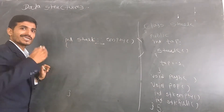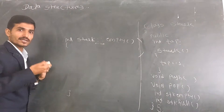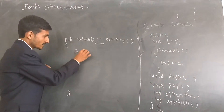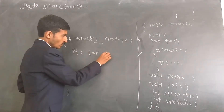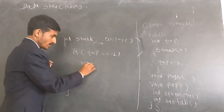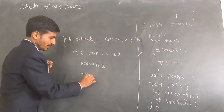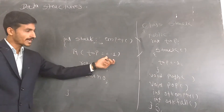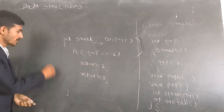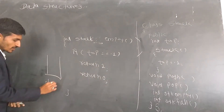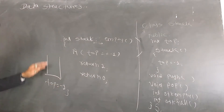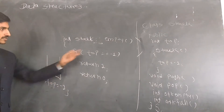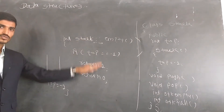To check the empty condition — meaning there is nothing in the stack and we are trying to retrieve data — that is not possible. So we write the condition: if top equals minus one, then return true, otherwise return false. We can also say return 1 and return 0. When top equals minus one, there is nothing in the stack, so it is stack empty. That is the initial condition of a stack.